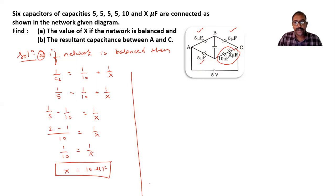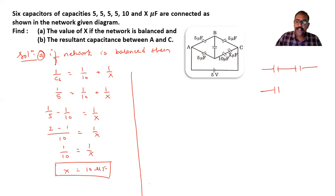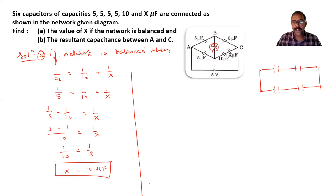Now for the second part — finding the resultant capacitance between A and C. You can redraw the alternate diagram like this: 5, another 5, then 5 and 10, with x total being 5. The middle capacitor is not considered because if the network is balanced, no current flows through the middle capacitance.